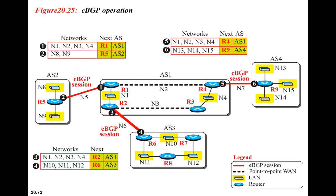Let's look at what information is exchanged at point 1 in the network. We know that if we want to reach network N8 and N9, the next router we use is R5, which is in AS2. If we want to go from AS2 to other networks, to reach N1, N2, N3, and N4 we have to go through R1. So we are coming to know about the contents of other autonomous systems through these border routers.